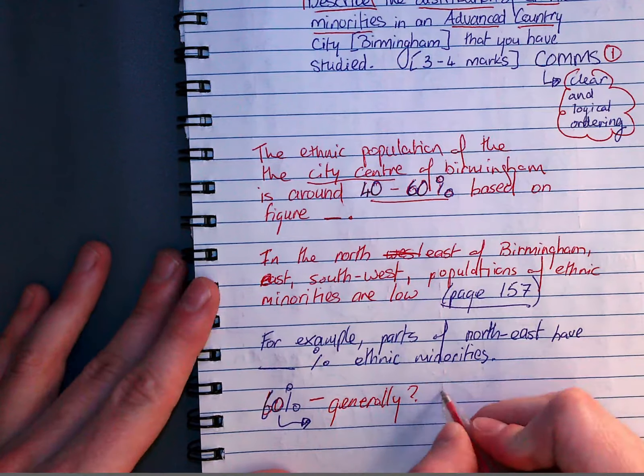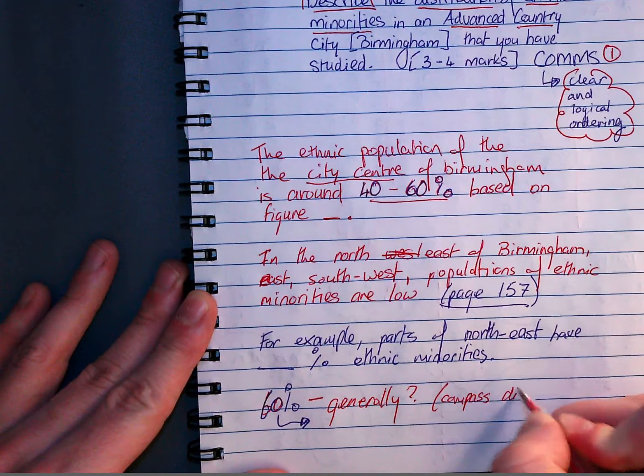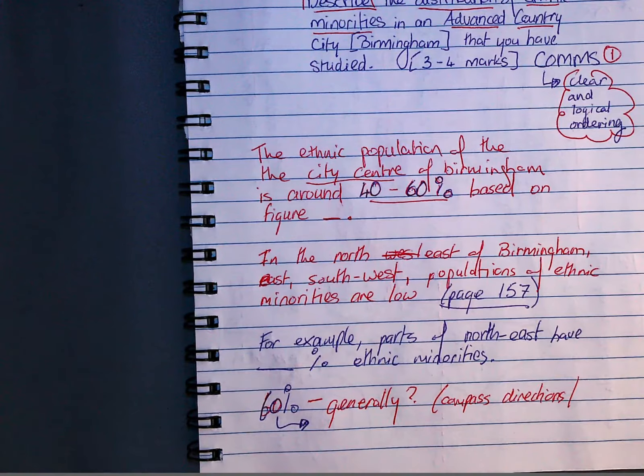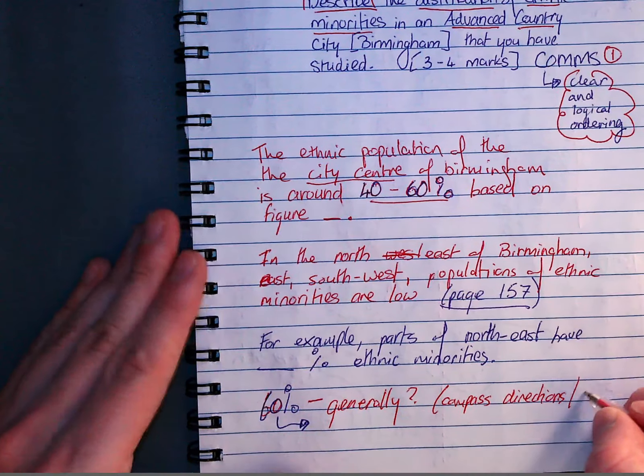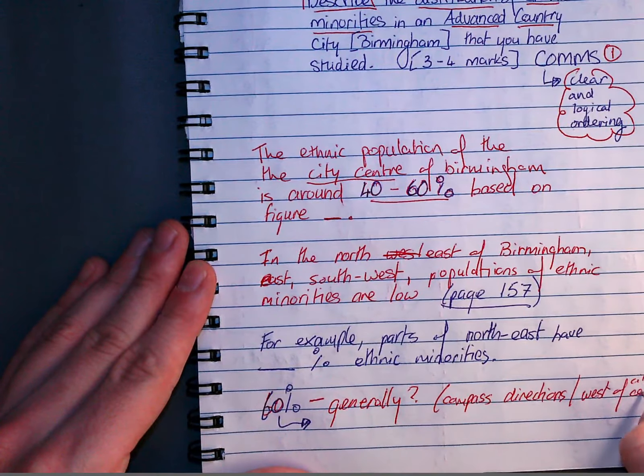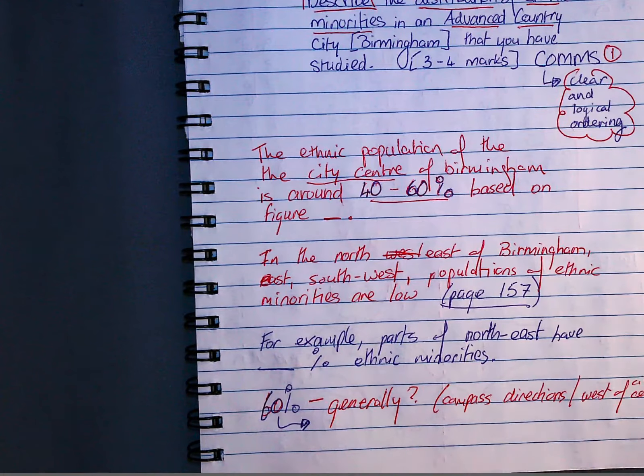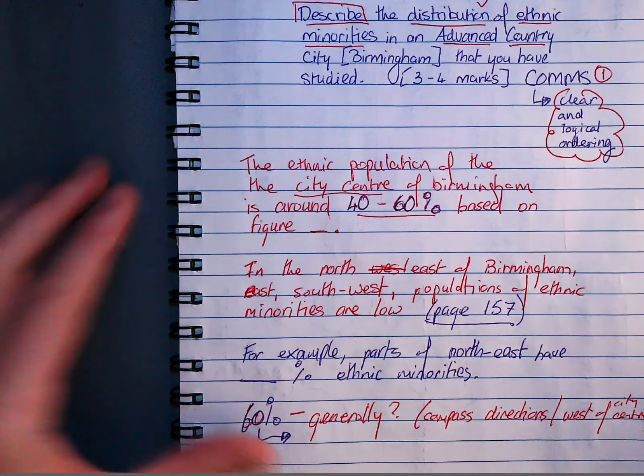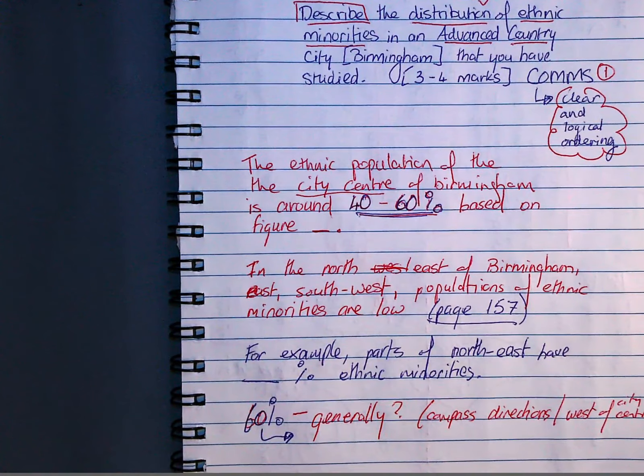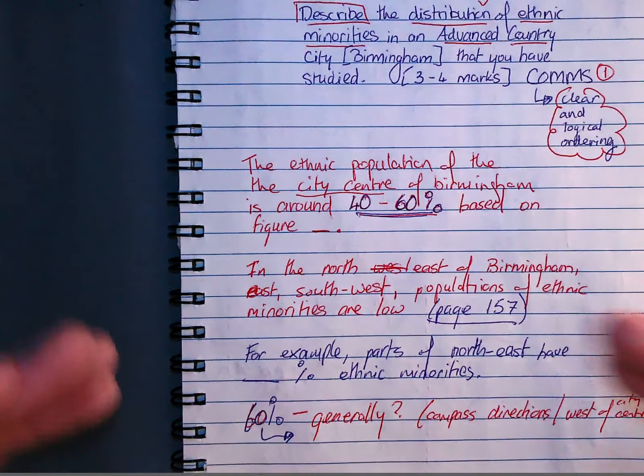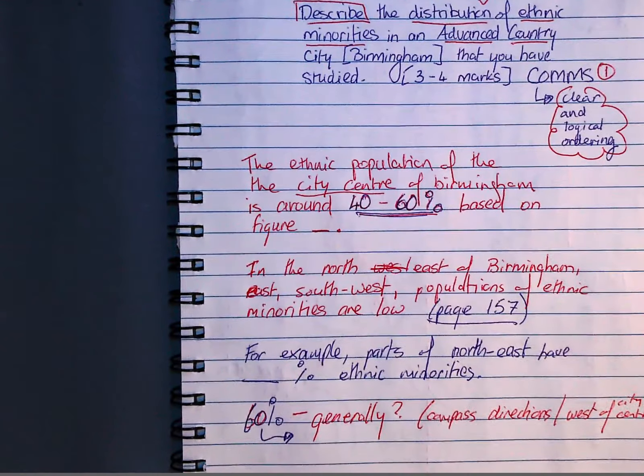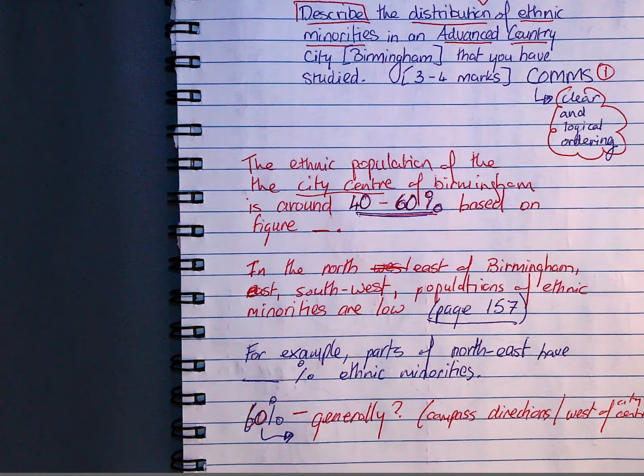Okay. Now that is plenty of information for you to answer that question. And I wish you the best of luck with it. Please make sure you stick to the general comment, specific example structure. Again, data goes after your general place, which would be the city center, or Birmingham, east, south-east, north-east. You make sure that you get your communications mark, your logical ordering, and clear and logical ordering mark. Good luck with that, Year 9.